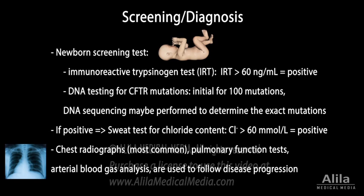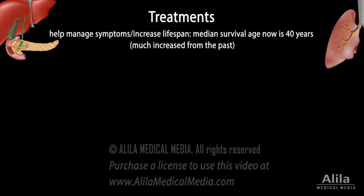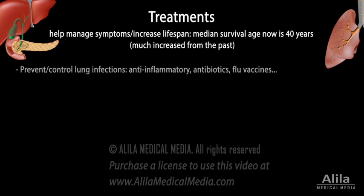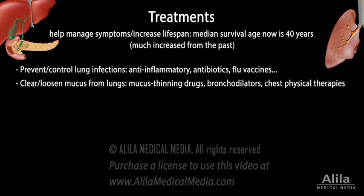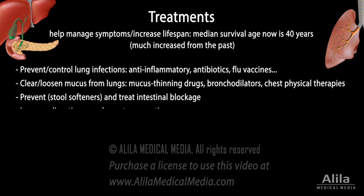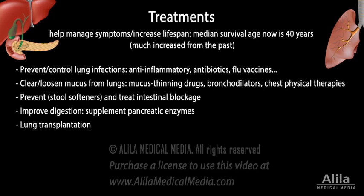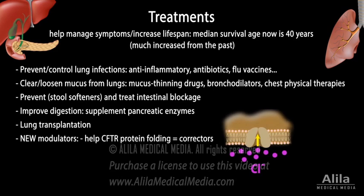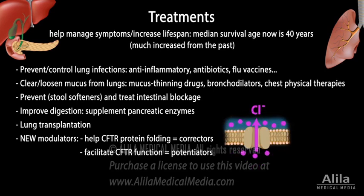There is no definitive cure for CF, but early diagnosis can help manage the condition and increase lifespan. A number of medications and therapies are available to help prevent or control lung infections, clear or loosen mucus from the lungs, prevent or treat intestinal blockage, and improve digestion. Lung transplantation may be required for severe lung damage. Recently, new modulator molecules have been developed to directly interact with the mutated CFTR protein to correct its folding and facilitate its function.